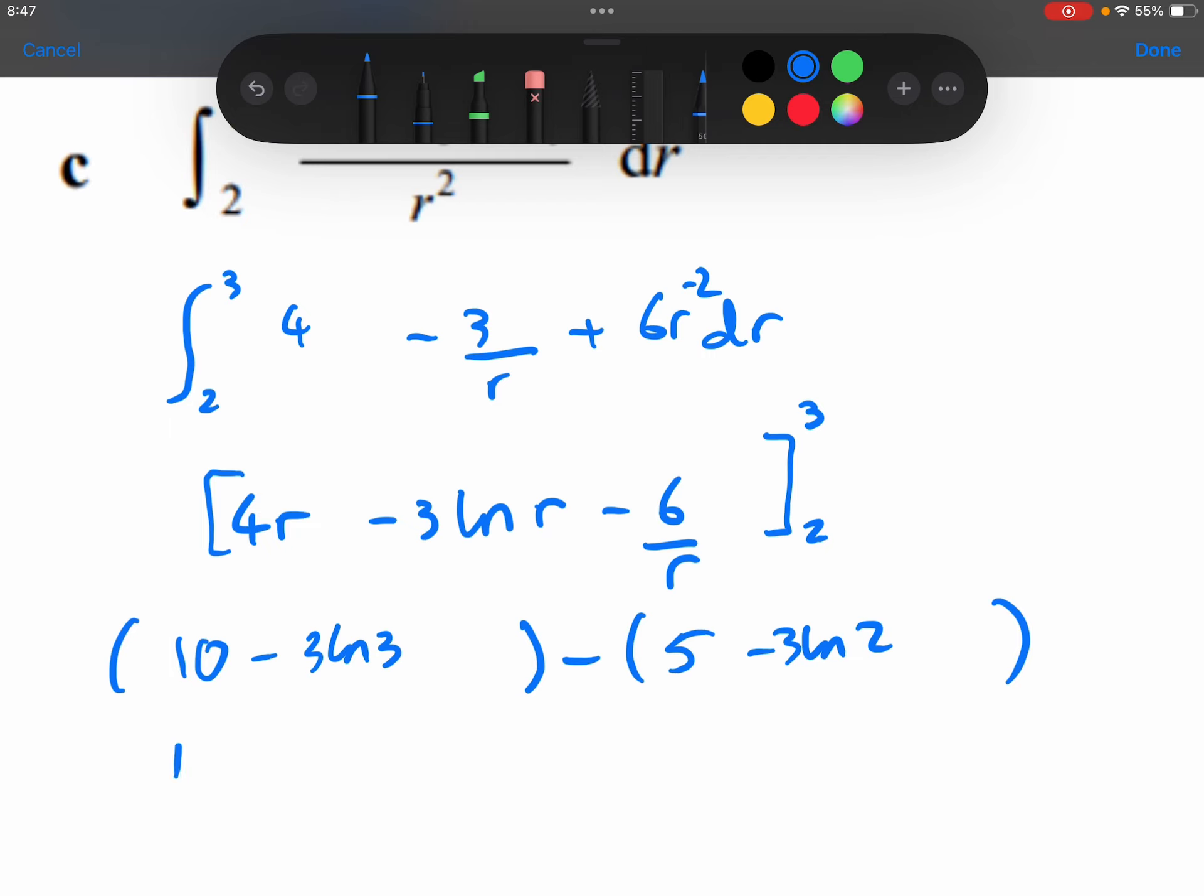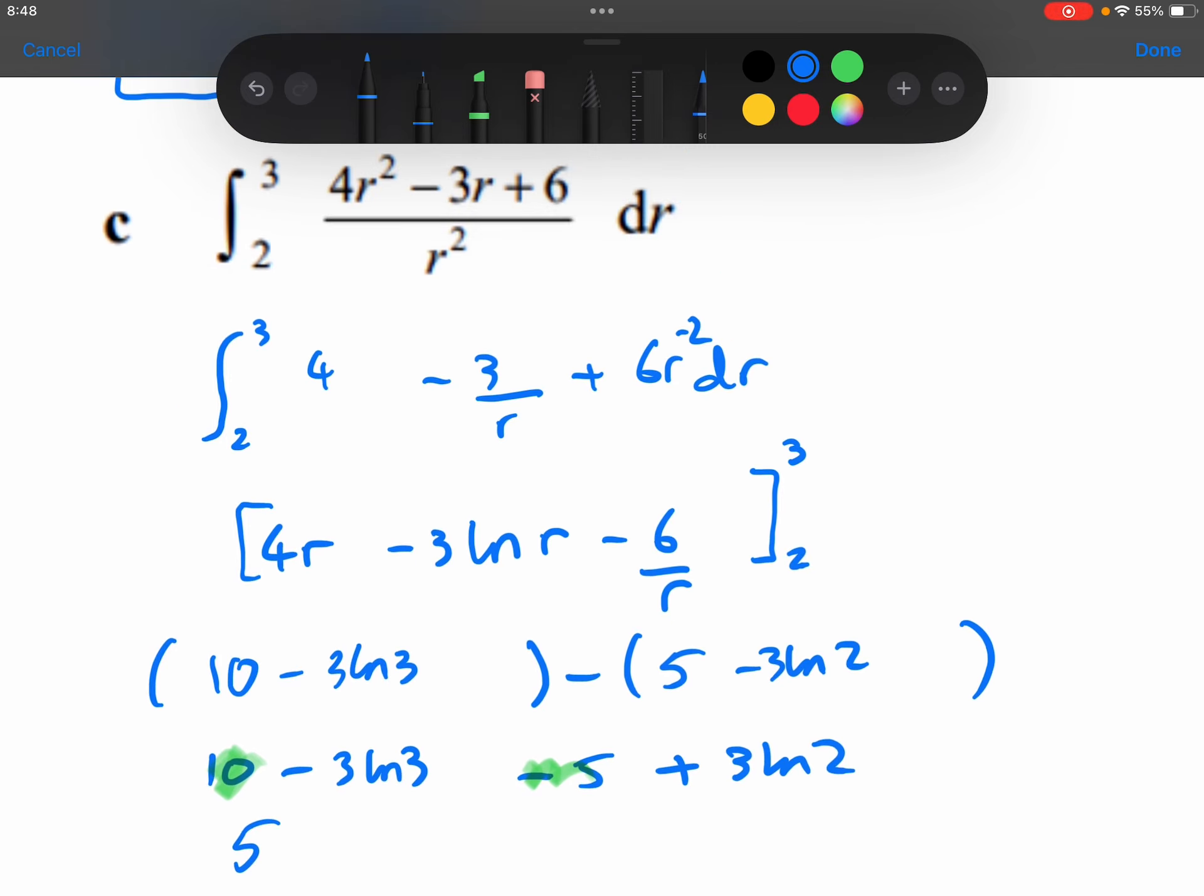And let's combine these together. So 10 minus 3 ln 3, minus the 5, minus minus, so plus 3 ln 2. So 10 minus 5 is 5. And I'm just going to rewrite these logarithms so I've got the positive one at the front, so that it allows me to use the laws of logarithms a little bit more easily. So because I've got a subtraction here, I can divide on the insides. So I'll get ln 2 over 3.